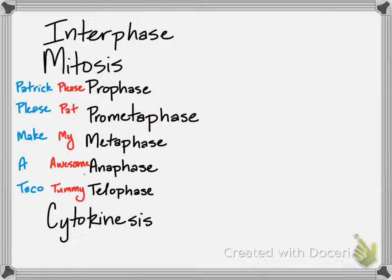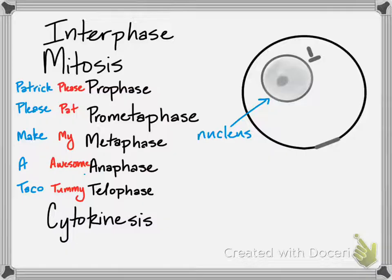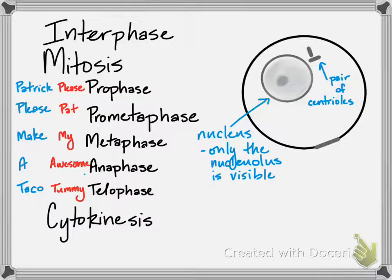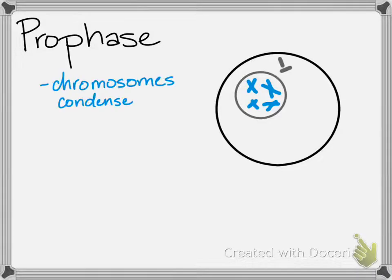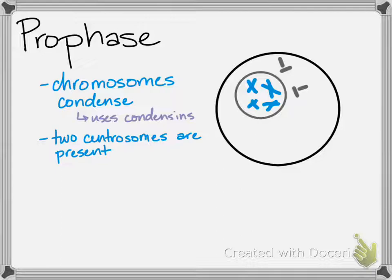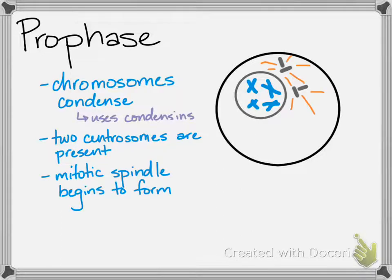There are lots of great resources and pictures online of what cells look like during the phases of mitosis. During interphase, the cell still has a distinct nucleus and you may be able to see the nucleolus as a denser region within it. You'll also see a pair of centrioles, which replicate at the end of interphase during G2 leading into prophase. During prophase, chromosomes become distinctly visible because they have condensed using condensin proteins, and the two centrosomes and mitotic spindle fibers are starting to form.